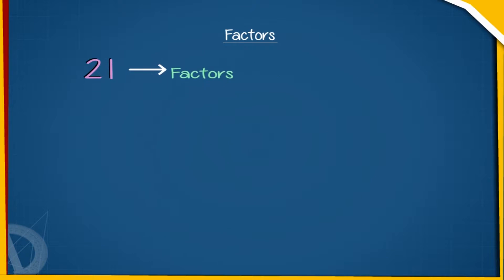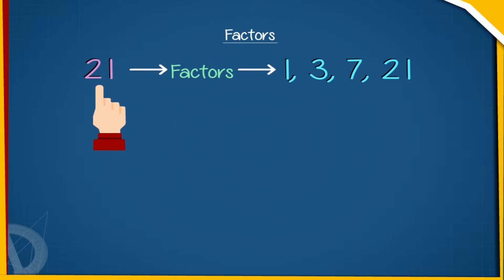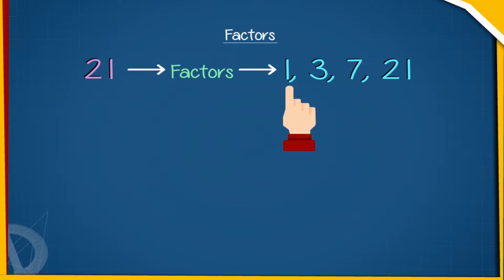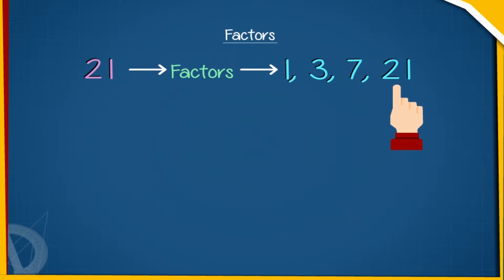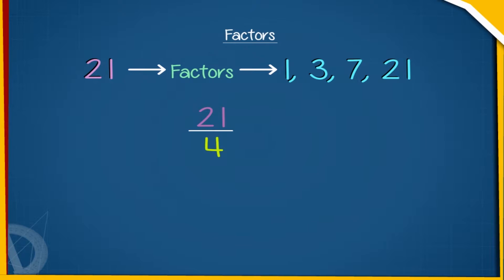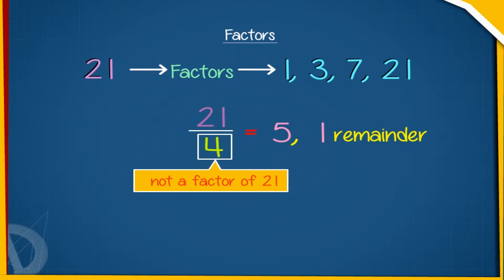In the same way, if we take the number 21, it has 4 factors namely 1, 3, 7, and 21. But if we divide the number 21 by 4, we get the remainder 1, and so 4 cannot be a factor of 21.